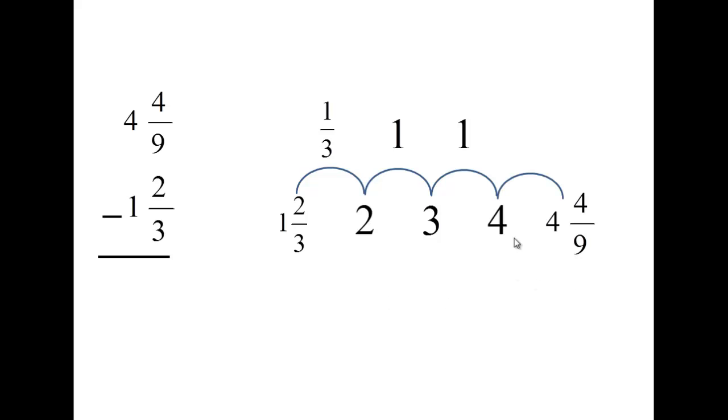Then we have this last jump from 4 to 4 and 4 9ths. And that seems trickier than it is, because all you're doing, as you can imagine, is just adding 4 9ths. So, last step, we just have to add up all of these fractions. But as you can see, we have the same problem we had before in another question, where these two fractions don't speak the same language. You need to find a common denominator. So, same idea. You think to yourself, what can go into 3 and into 9? And in this case, it's a little interesting, because the answer is 9.